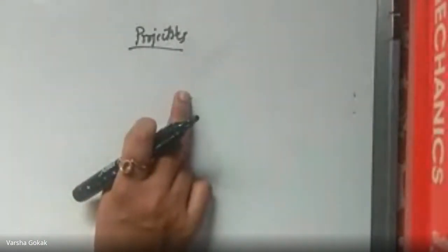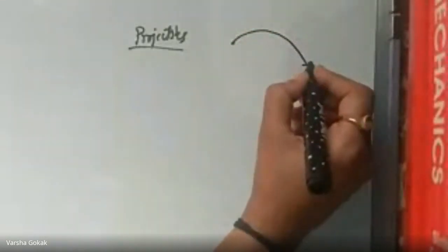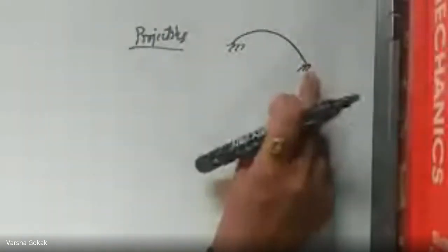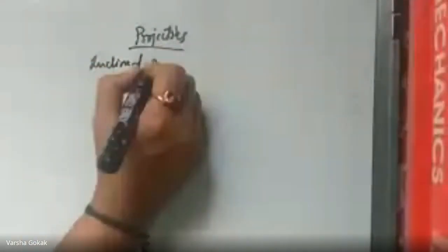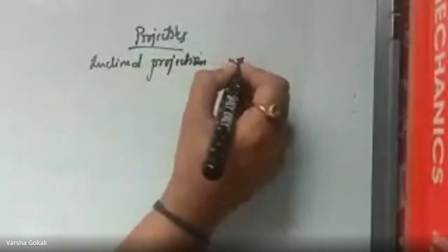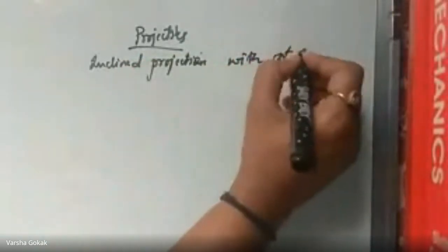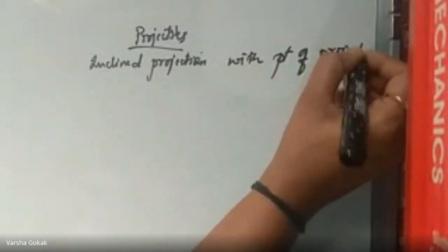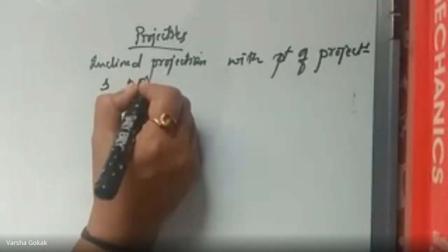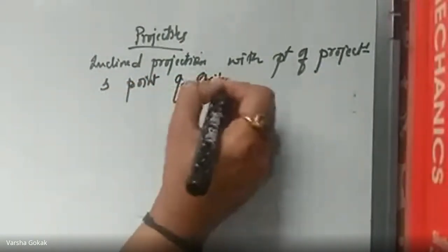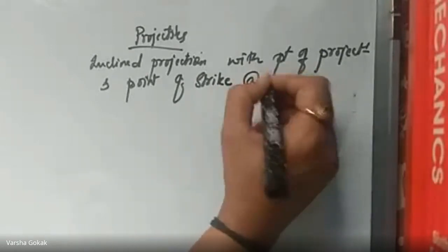Today we will take up the third case in projectiles — that is when the point of projection and the point at which the particle strikes are both at different levels. The title is: inclined projection with point of projection and point of strike at different levels.